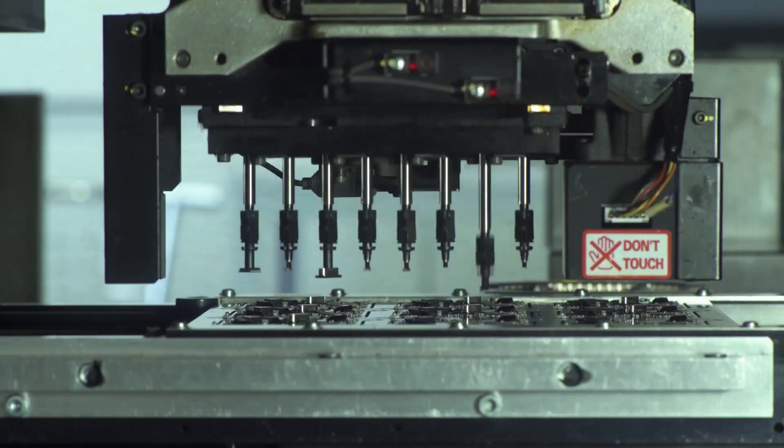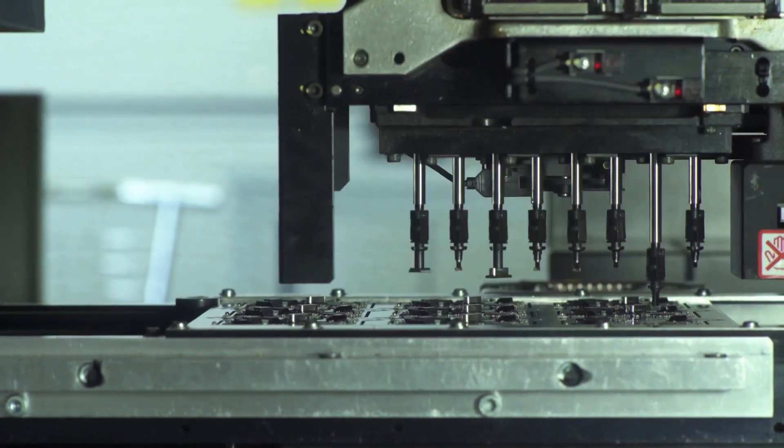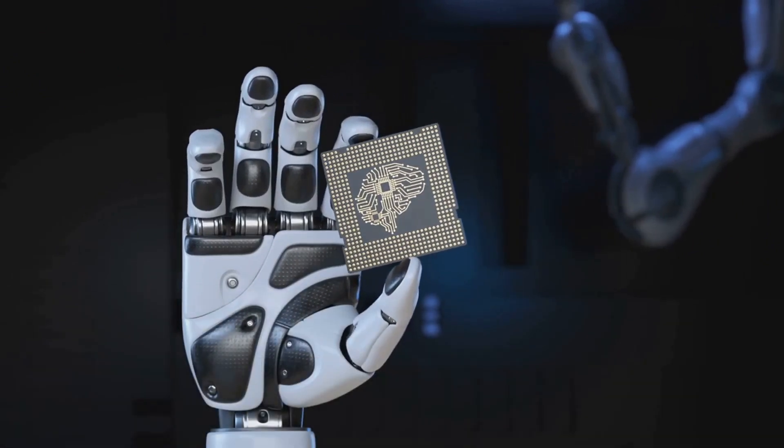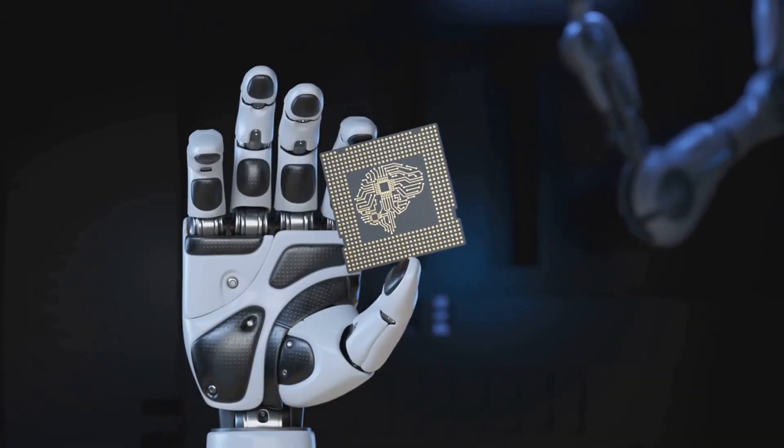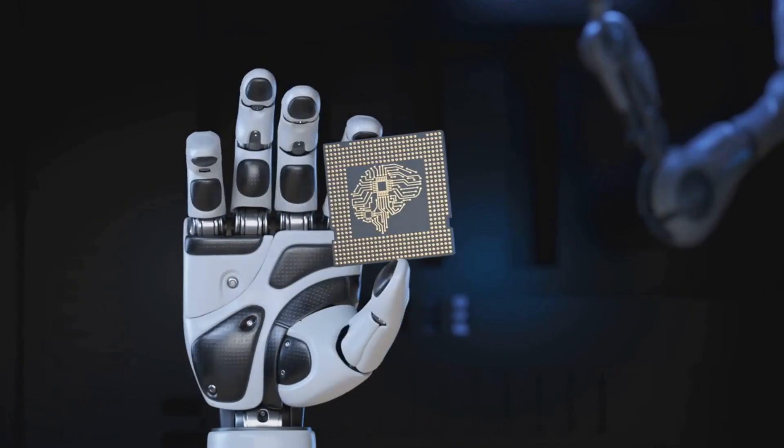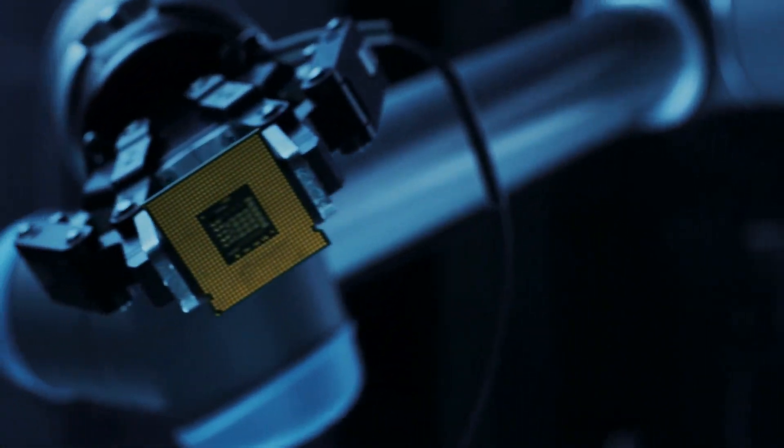But what does it take to create a humanoid robot? Let's delve into the components that make up these futuristic machines. At the heart of these robots lies a powerful brain, fueled by large AI models. It's a sophisticated piece of technology designed to mimic the very essence of human perception, control, and interaction.